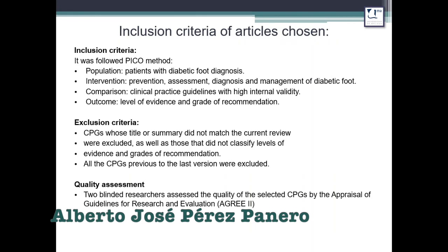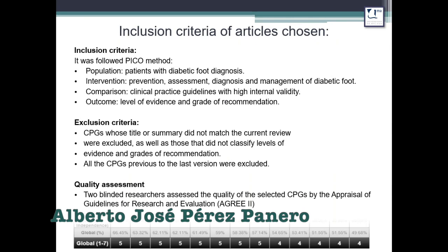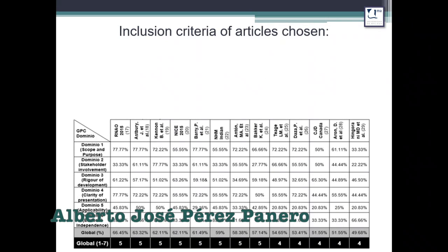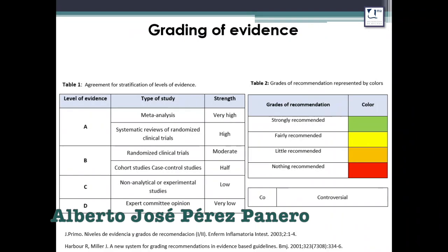The quality assessment involved researchers assessing the quality of the selected CPGs using the AGREE2 evaluation. For grading of evidence, we evaluated the levels of evidence according to letters and the grade of recommendation according to colors. The best level of evidence is level A and the recommendation grade is green, while the lowest is level D in red.